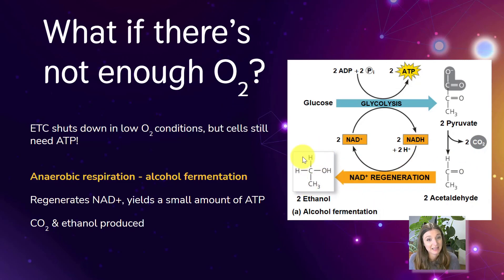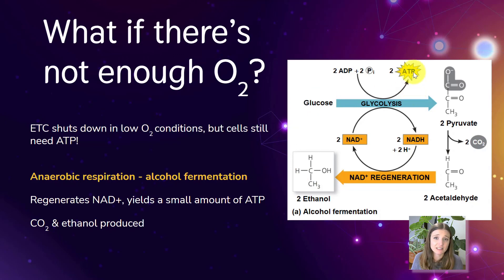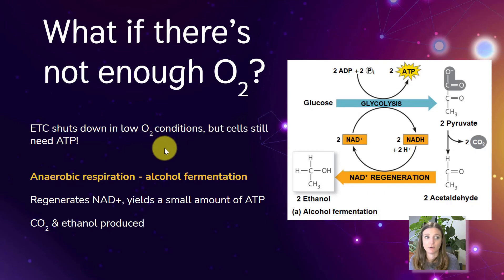Ethanol can be really dangerous to these cells though. Too much ethanol, too high a concentration, can kill the cells. So this cannot go on forever — we can only reach a certain concentration of ethanol during alcohol fermentation. But it's a way for the cells to make a little bit of ATP when the mitochondria aren't functioning because we have low oxygen concentrations.